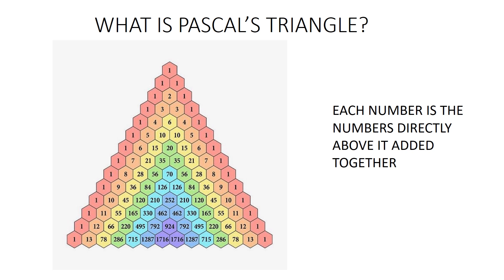Pascal's Triangle is defined as a triangular array of binomial coefficients. The first row is the 0th row, represented as n = 0, which has a unique entry of 1. The subsequent terms in each row of the triangle are obtained as the sum of the adjacent entries directly above it.